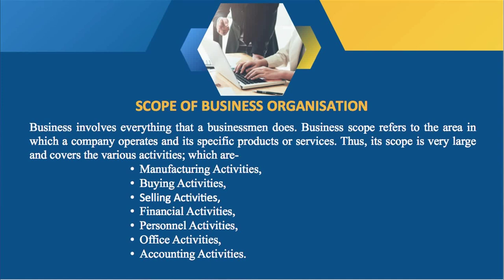The first activity is the manufacturing activity. It is concerned with converting raw materials into final goods or finished goods. Next is buying activity. It is a crucial function in all kinds of business, whether for trading or manufacturing purposes. The purchase department within a business deals with those tasks, responsible for acquiring the necessary goods and materials, ensuring a smooth flow of resources for the business's trading or manufacturing needs.